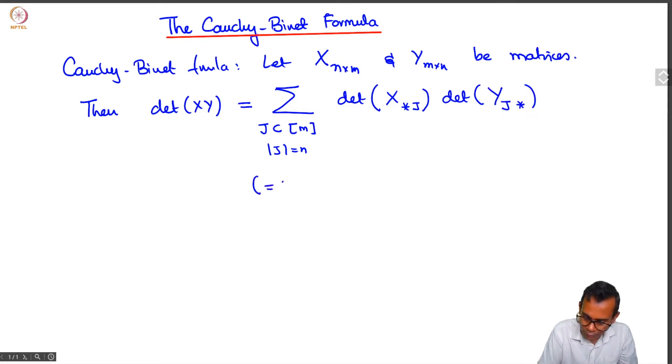This will be 0 if n is greater than m because this sum will be an empty sum. You cannot choose a subset of size n from a set of size m if n is greater than m. If n equals m, you get the usual formula for the multiplicativity of the determinant.